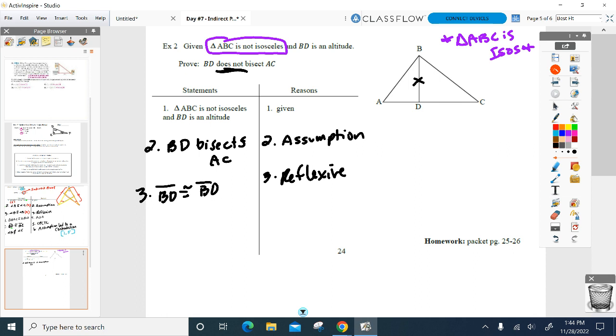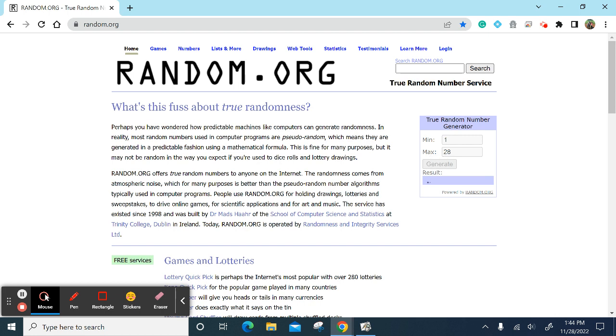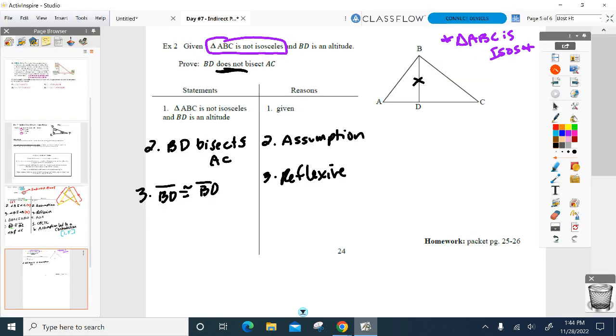Remember, I'm trying to make it isosceles, so let's start pushing ourselves towards there. I don't know where we're going to go next. Okay. AD congruent to DC. And where do we get the bisects from? The assumption, right? The assumption. Use your assumption as a given. Definition of bisects.